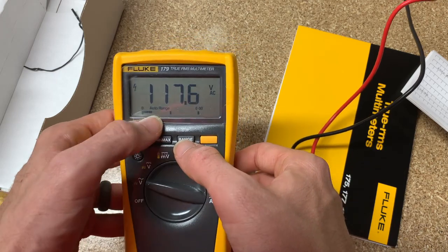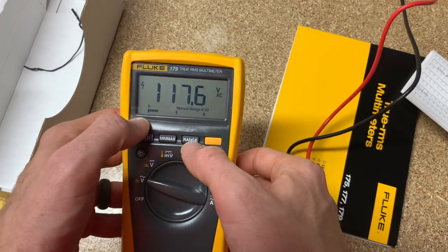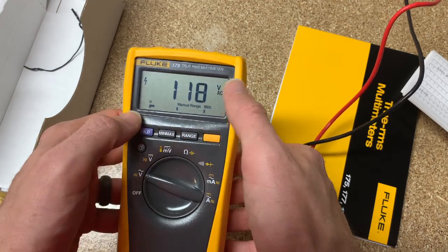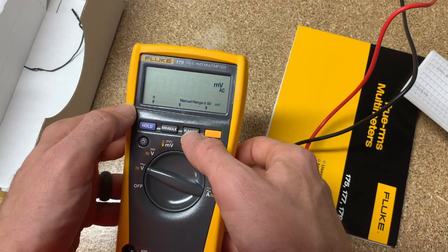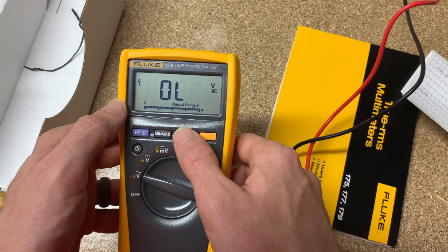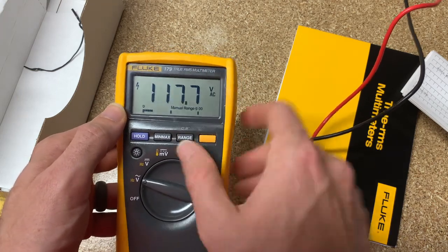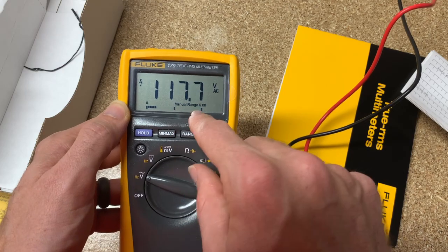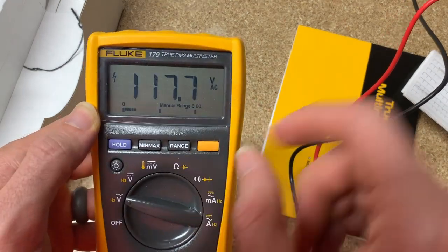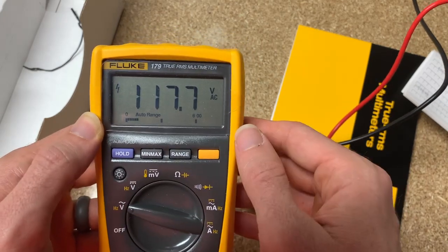We can hit range if we want to change this range. So now we're in auto ranging. But if we hit range, manual range, we can start changing this to where it just goes to 118. Stays there, right? Millivolt, obviously out of limit for all these ranges. And then you get back to where we were when we first started with the auto range. You want to go back to auto range after you've been in manual. Just hold this range button down for a couple seconds. It'll go back to auto and you're good to go.